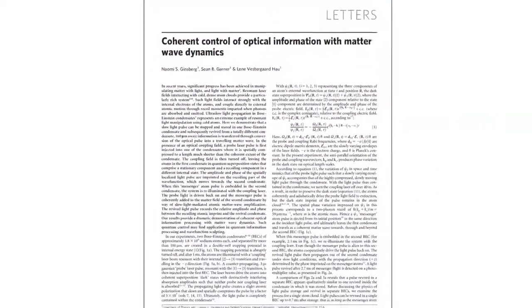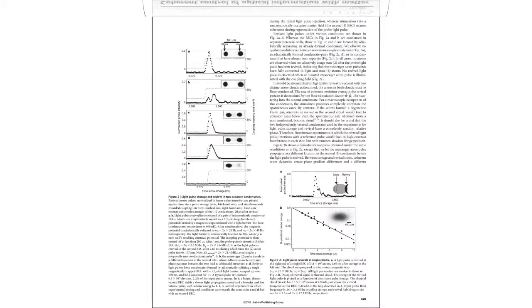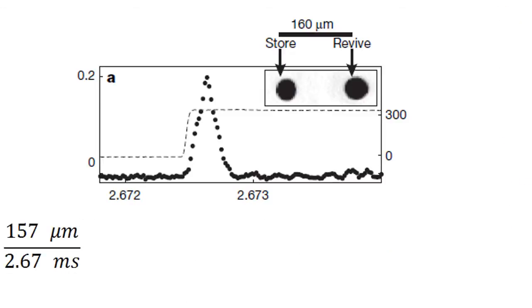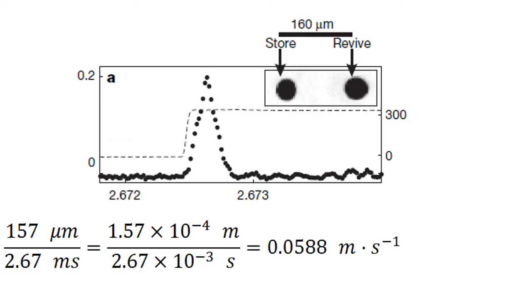But how fast was that matter wave traveling? Figure 2A gives us the answer. The caption reads... Dividing distance by time gives us the speed, which comes out to 0.0588 meters per second. When this is multiplied by the conversion factor to miles per hour, we see that the matter wave was in fact traveling at 0.13 miles per hour.